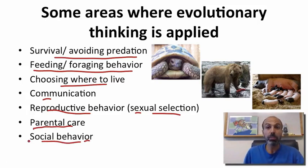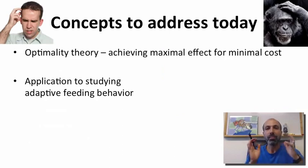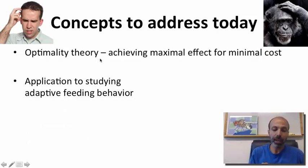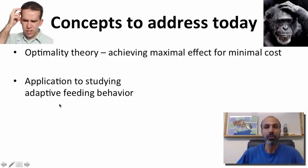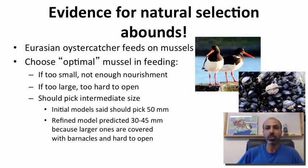The focus of this particular video is optimality theory — specifically how you can get the maximal effect for the minimal cost, which is what we would infer that natural selection would push species to ultimately be able to do. We'll look at applying optimality theory to the study of feeding behavior and why feeding behavior is often adapted. As you know, the evidence for natural selection abounds across species.